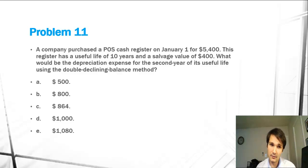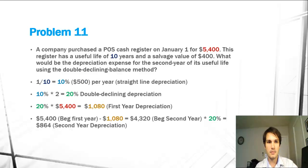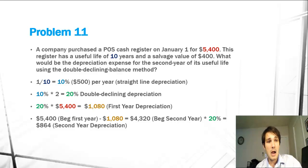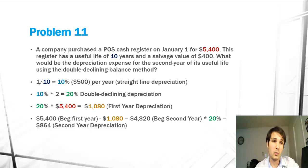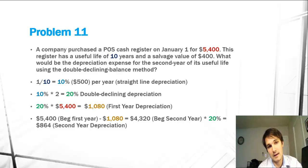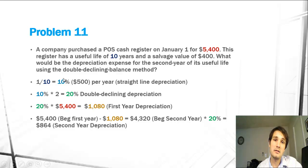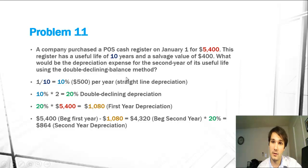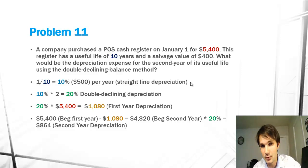There's no guessing here — you just have to get the right answer, so let's do the calculation. I color coded everything and I hope that helps. We can see there are 10 years of useful life, so we calculate that every year we use exactly 10% of its useful life: 1 divided by 10 gives us that 10%. In the straight line method we take the $5,400 original value, subtract out the salvage value to get $5,000, then multiply by 10%. But this isn't straight line — this is double declining balance depreciation.